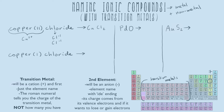Now let's do copper(I) chloride. This shows why we need Roman numerals — these two coppers lost different amounts of valence electrons. Copper(I) means the Roman numeral only talks about the copper, giving Cu¹⁺. Chlorine again has seven valence electrons and wants to gain one, so Cl⁻. Now Cu¹⁺ plus Cl⁻ is already balanced with just one of each. So the final answer is CuCl.